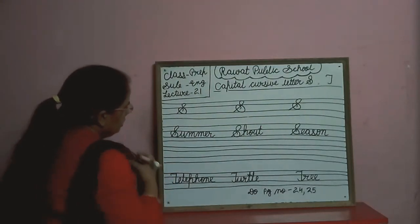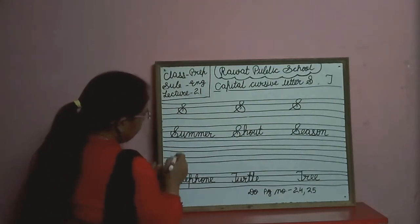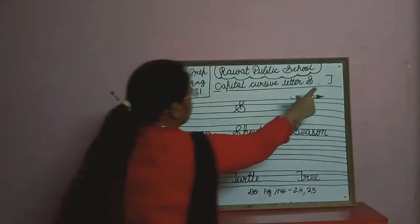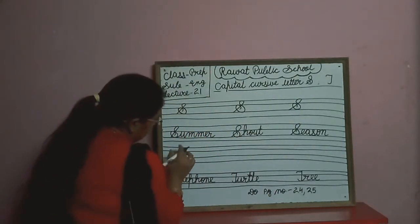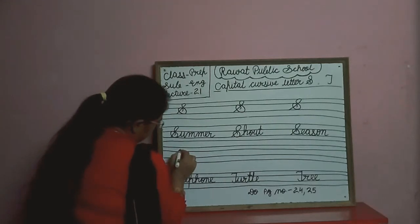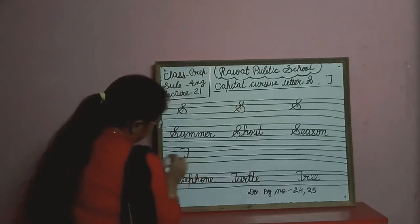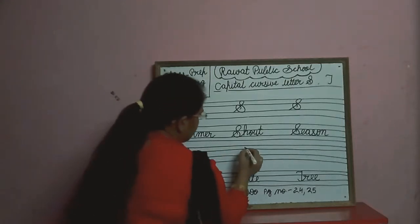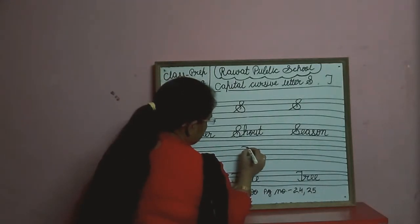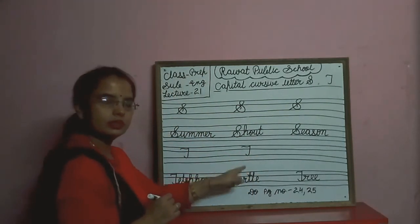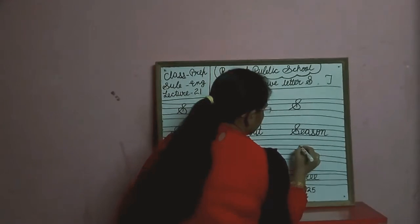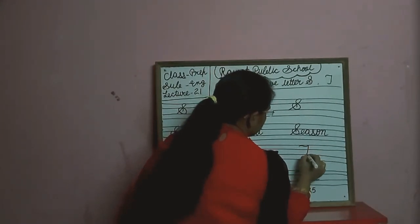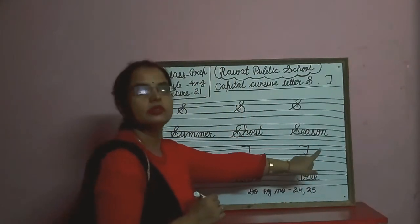Now we will make a capital cursive T. We will start from this line. Go up, come back and curve — this is capital cursive T. Once again: curve — this is capital cursive T.